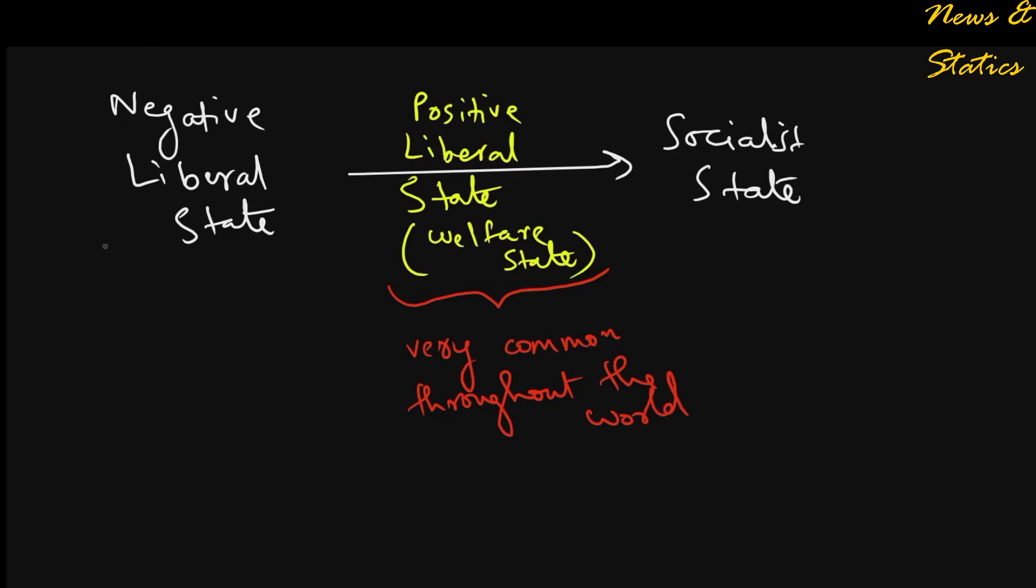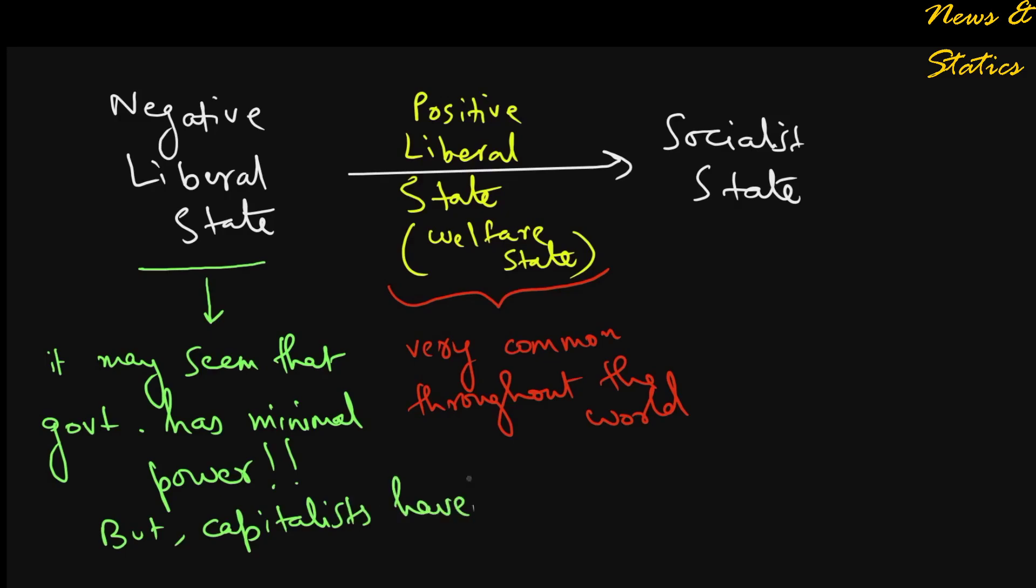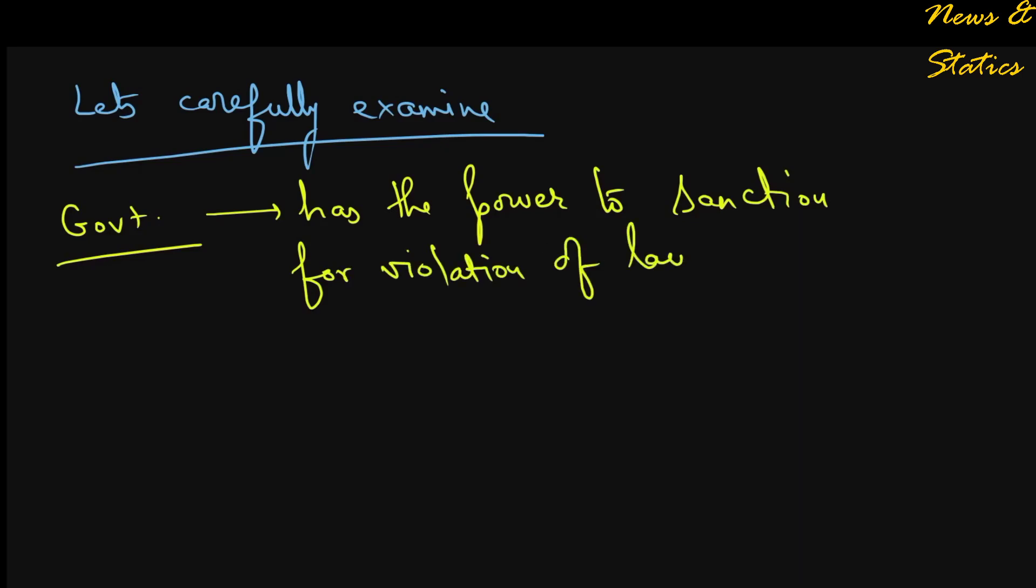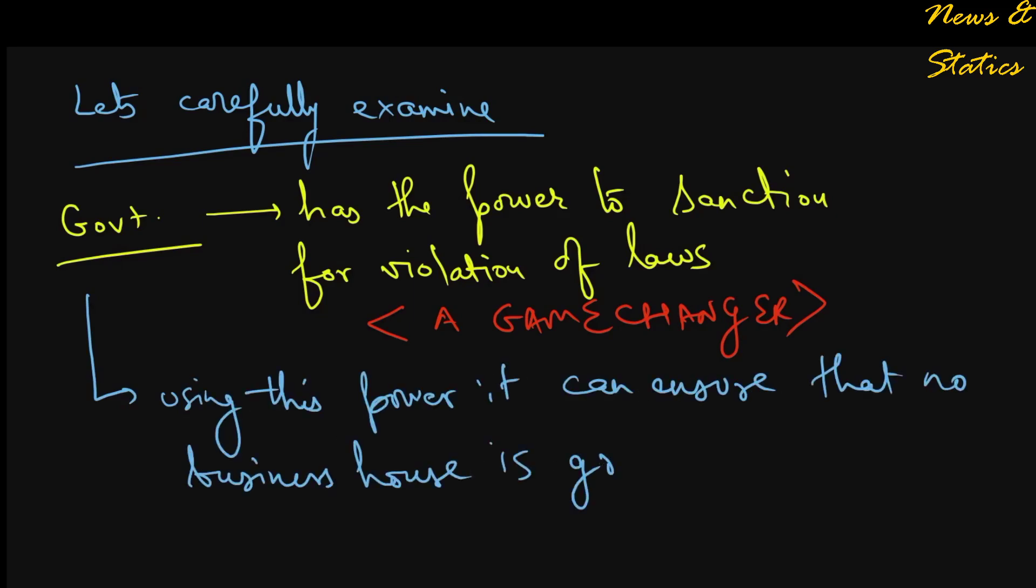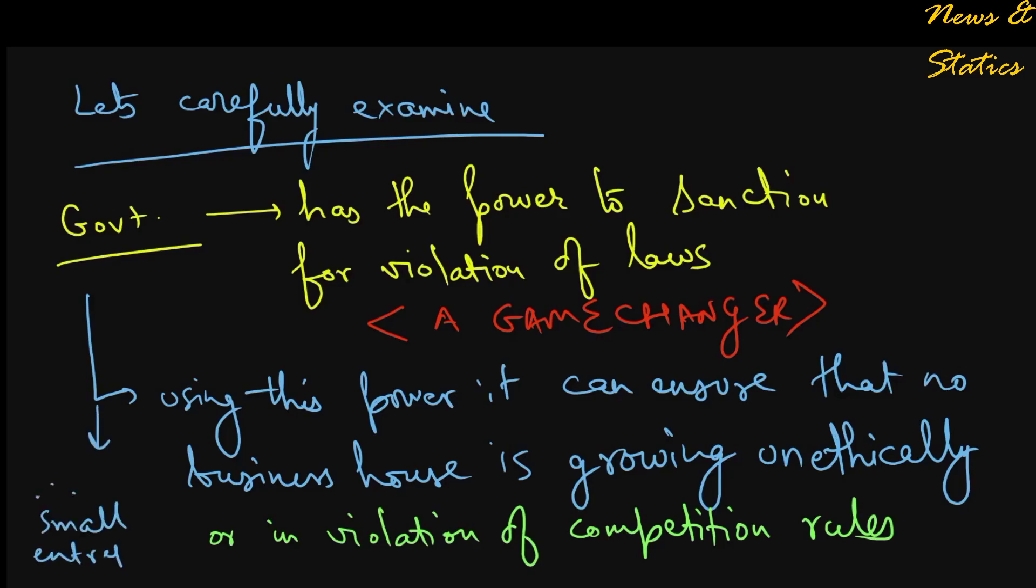Now note the shift in power during this process. In a negative liberal state, it seems that the government has minimal power and the capitalists and business owners have a large degree of power. But if you carefully examine, you'll understand that the government still has the power to sanction for violation of laws, which is a game changer. Using this power, it can ensure that no enterprise or business house is growing by unethical means or in violation of competition rules, which may hinder the rights of those small entrepreneurs who want to grow as per their talents.